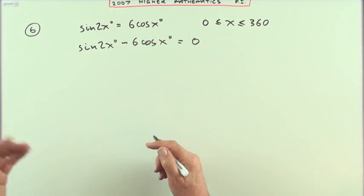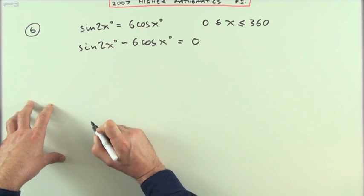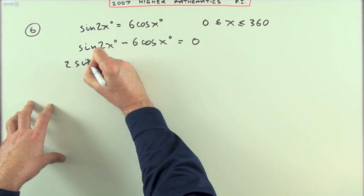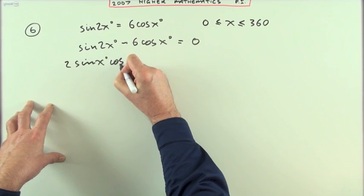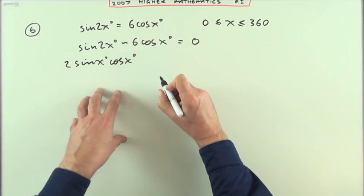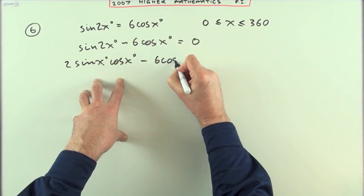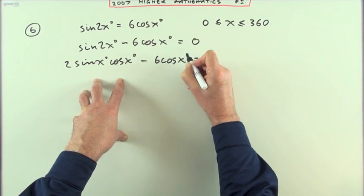Use the expansion. Look up the front for sine 2x and you'll find 2sin(x)°cos(x)° minus 6cos(x)° equals zero.